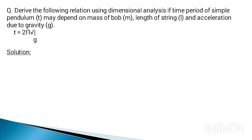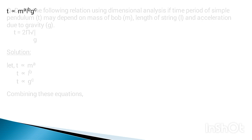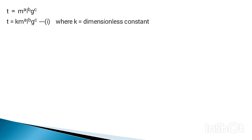Since it is given that the time period may depend on mass of bob m, length of string l, and acceleration due to gravity g, we suppose: T ∝ mᵃ, T ∝ lᵇ, and T ∝ gᶜ. Combining these, T ∝ mᵃlᵇgᶜ, which changes into T = k·mᵃlᵇgᶜ, where k is a dimensionless constant.